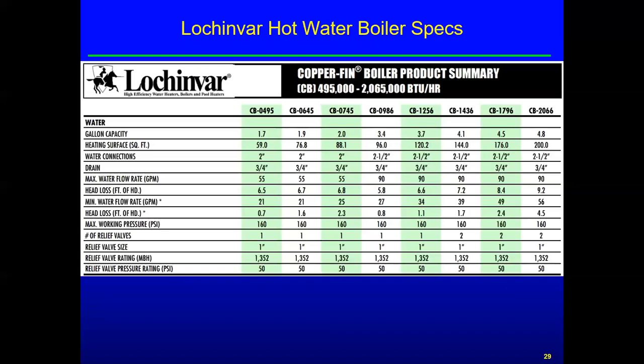Other specs from Lochinvar: head loss is what you use for sizing the pump — what's the pressure drop across the boiler? You've got all your other losses plus pushing through the boiler — about 4.5 feet of head. Maximum working pressure is 160, which matches up with the maximum for the low temperature water ASME code. Relief valve size is one inch. And interestingly, the number of relief valves is two — instead of putting a bigger one, they put two. I'd have to ask our industry contact why — maybe it's cheaper, maybe they think it's better.